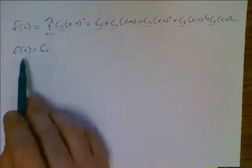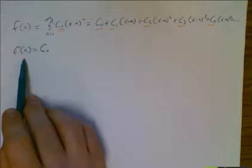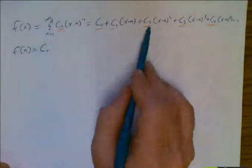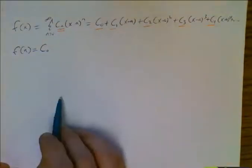All right. So to find c sub zero, I would just have to find f of a. Fair enough. How about c sub one, c sub two, c sub three, et cetera? So we've got to come up with some kind of formula here.